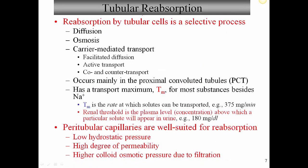Tubular reabsorption is a selective process. The tubule cells carry out separate processes including diffusion, osmosis, and carrier-mediated transport — where proteins actually transport solutes across cell membranes. This can be accomplished by facilitated diffusion, active transport (which involves ATP energy), and co- and counter-transport. Co-transport means moving things in the same direction; counter-transport means moving things in opposite directions. This occurs mainly in the proximal convoluted tubules, which absorb about 65% of the volume of the filtrate.